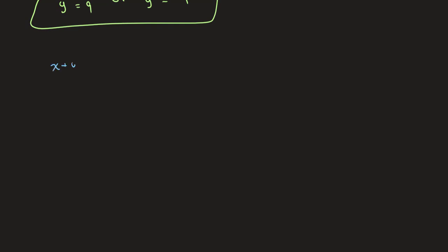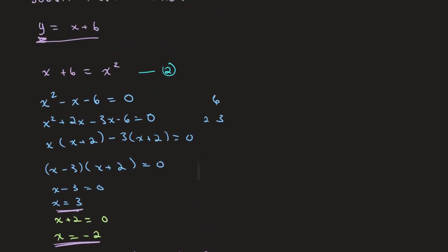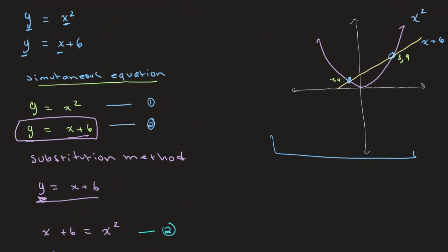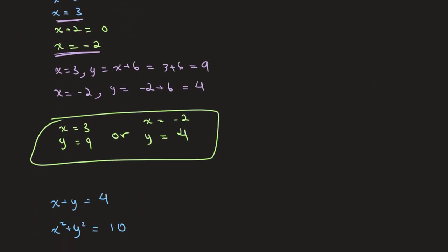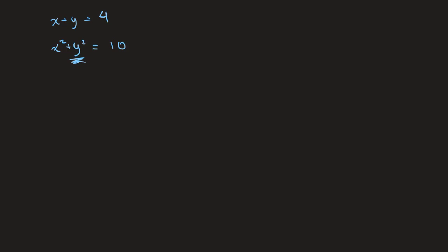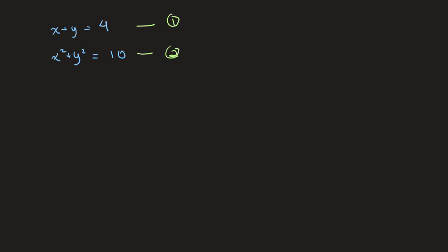We have two equations: x plus y is equal to 4, and x squared plus y squared is equal to 10. This is slightly more difficult because in our previous case y was alone in both equations, but here y is being squared in the second equation. We number them: equation 1 and equation 2. We can substitute the value for y — y is equal to 4 minus x — into our other equation.